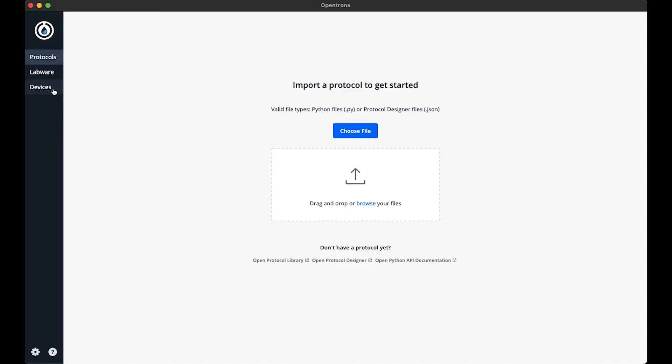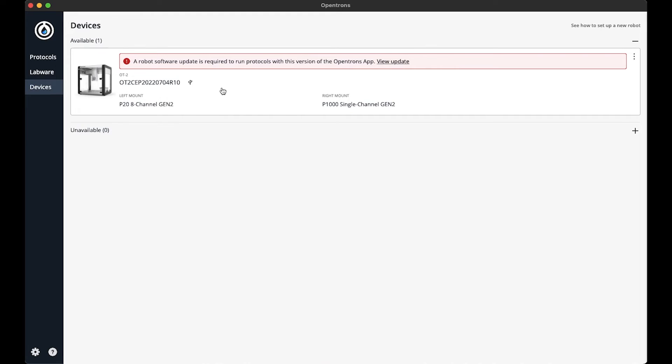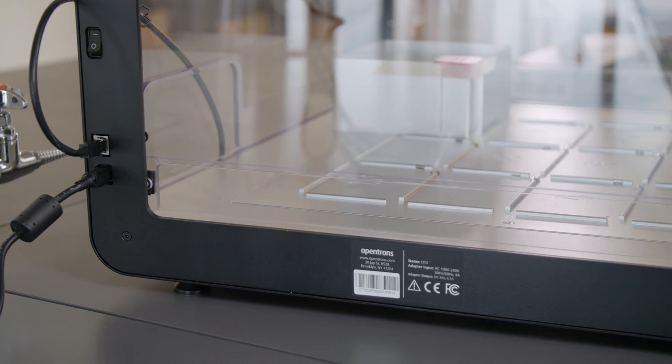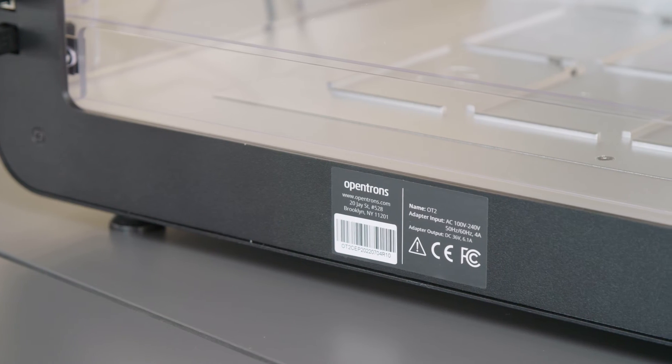I'll navigate to the devices tab, and here it is. The OT2 shows up as the serial number, and you can also find the serial number of the OT2 on a sticker on the side of the machine.